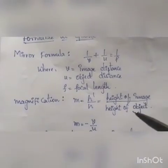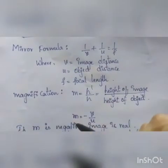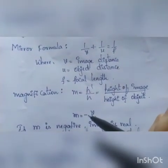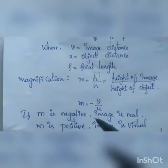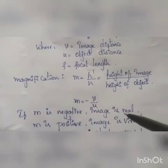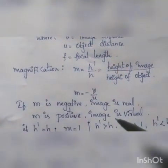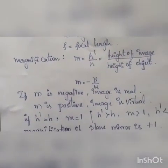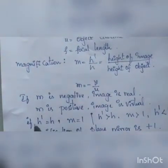When it comes to magnification, m = h'/h, that is height of the image divided by height of the object. The magnification relating image distance and object distance is m = -v/u. If m is negative, the image formed is real and inverted.